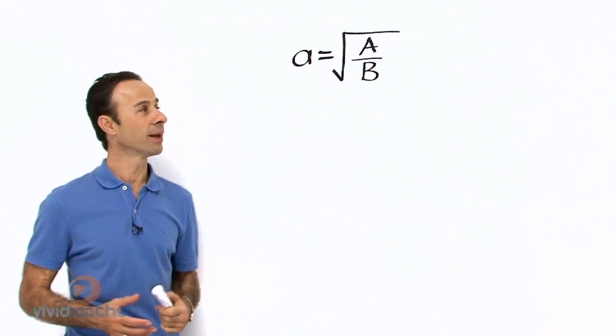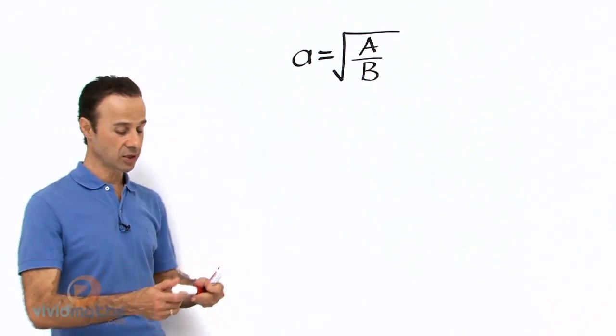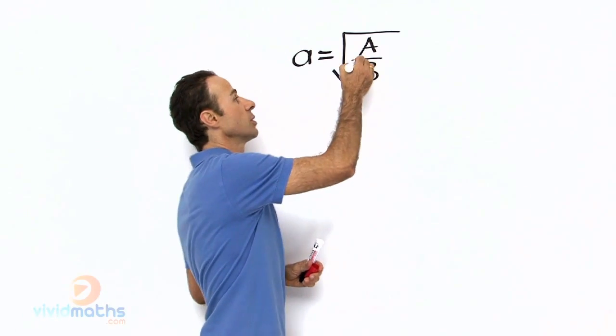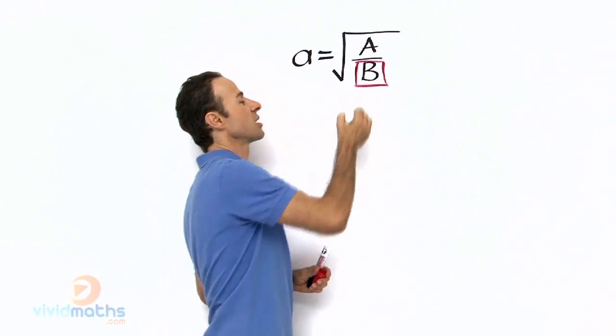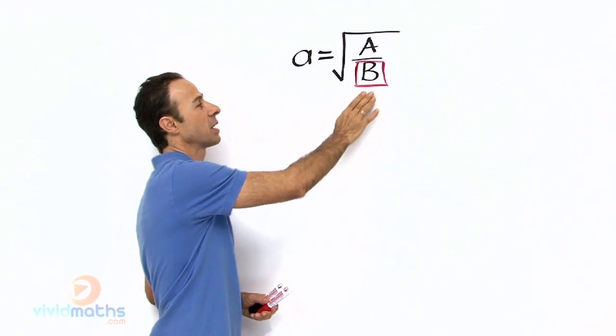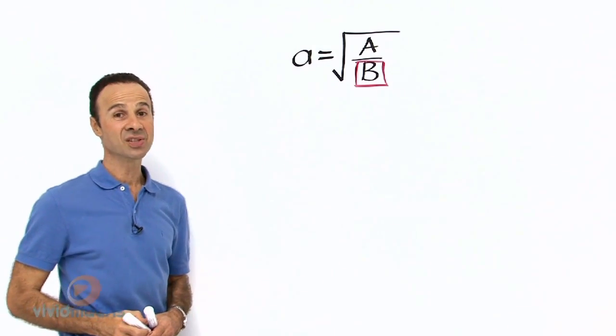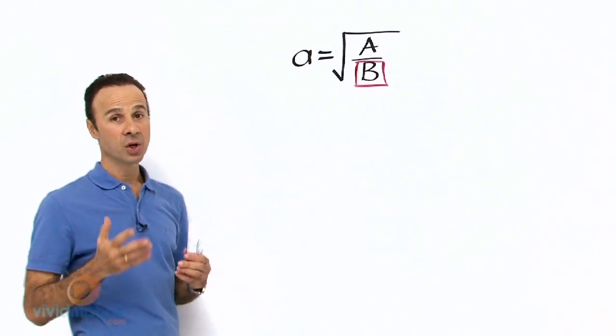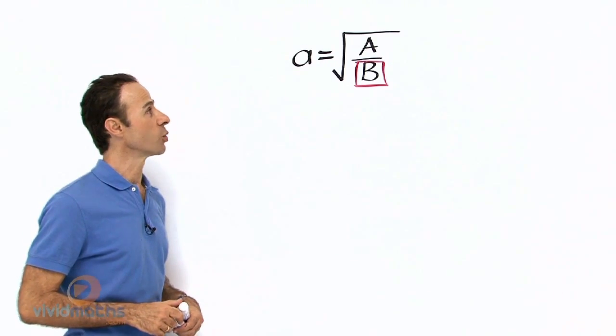Now what we are trying to do here is get b as the subject, so let me mark that out. First thing we do is mark out what we want as the subject. So little a is the subject now, how do we make capital B the subject? Do we swap them? Not that easy. Let me show you what to do.